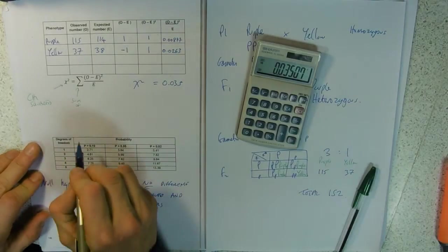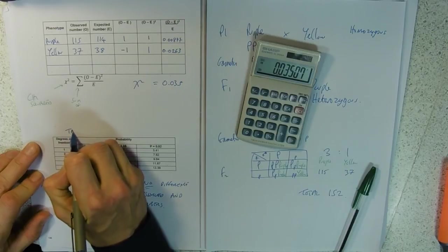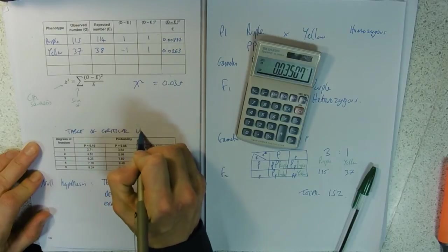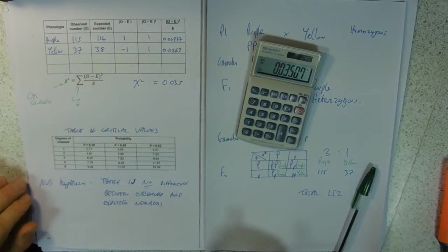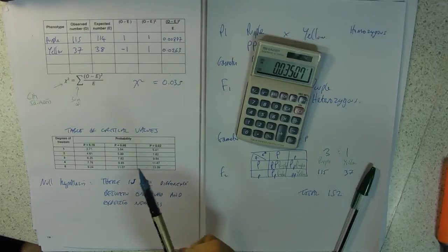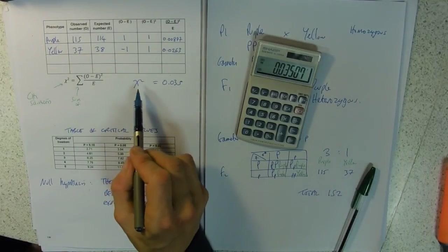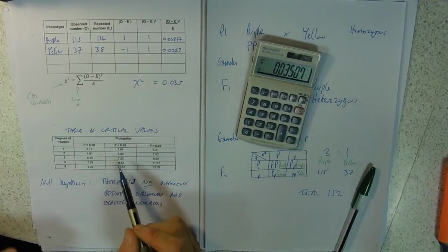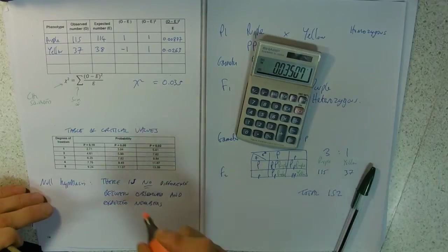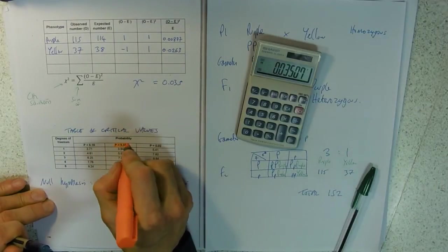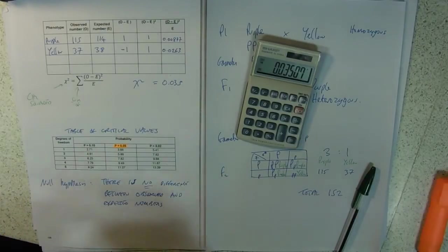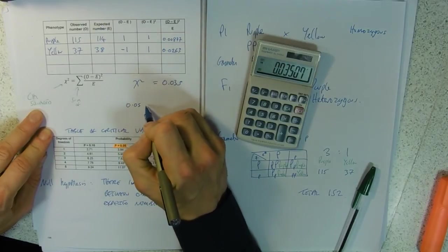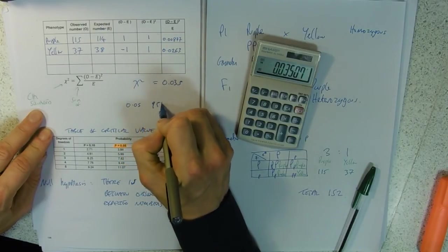You're given a table - this is a table of critical values. We're going to compare our chi-squared against one of these numbers. We use a probability of 0.05.